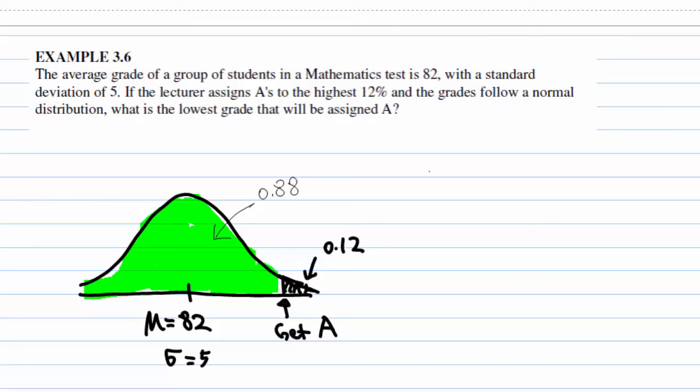This means that 88% of the students will not get A, or the probability that a student will not get A is 0.88, or the area to the left of the A grade, that means the green area, is 0.88.